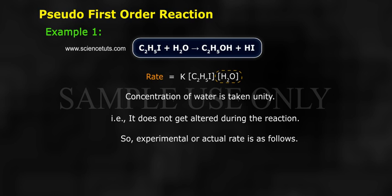So experimental or actual rate is as follows: Rate equals K times ethyl iodide concentration.